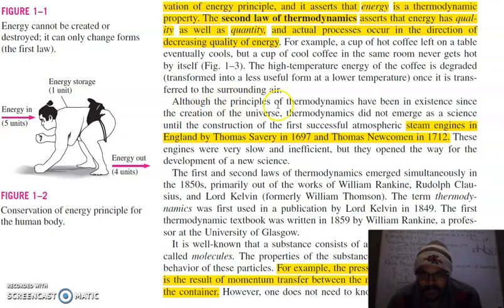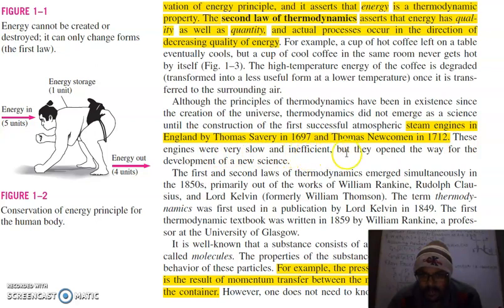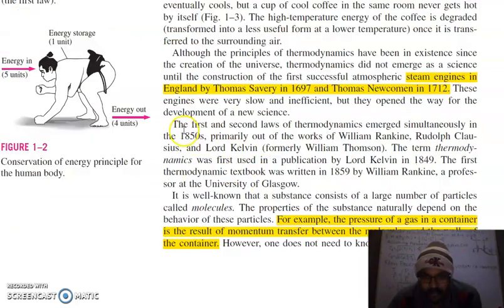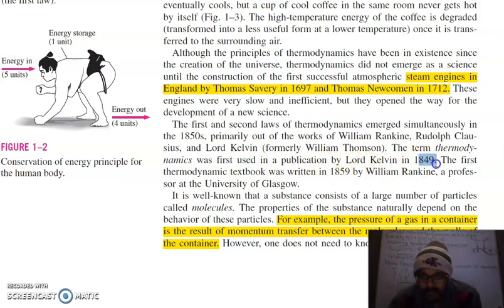Although the principles of thermodynamics have been in existence since the creation of the universe, thermodynamics did not emerge as a science until the construction of the first successful atmospheric steam engine in England by Thomas in 1697, and Thomas Newcomen in 1712. These engines were very slow and inefficient, but they opened the way for development of the new science. The first and second laws of thermodynamics emerged simultaneously in 1850, primarily out of the works of William Rankine, Rudolf Clausius, and Lord Kelvin. The term thermodynamics was first used in publication by Lord Kelvin in 1849, and the first book was written in 1859 by William Rankine.